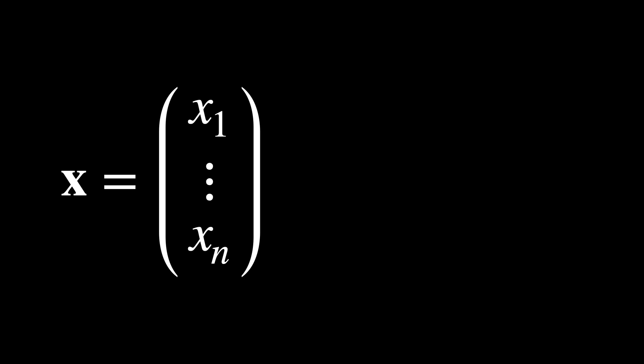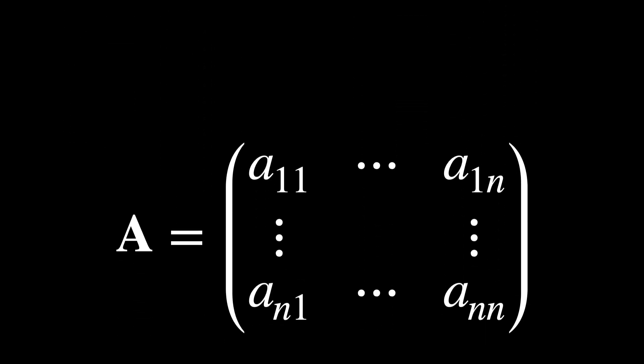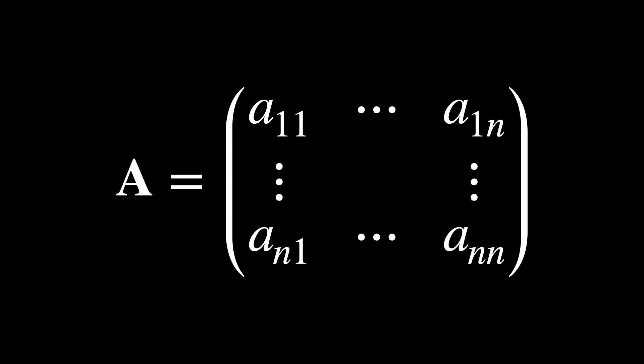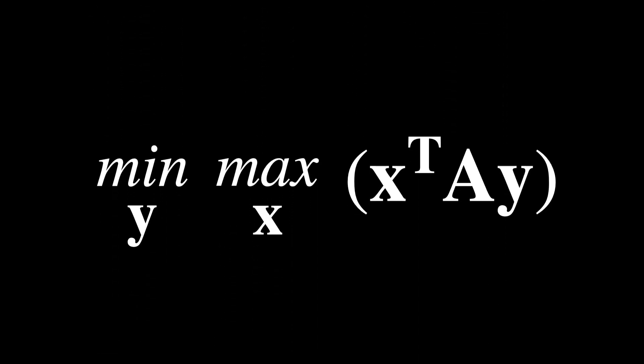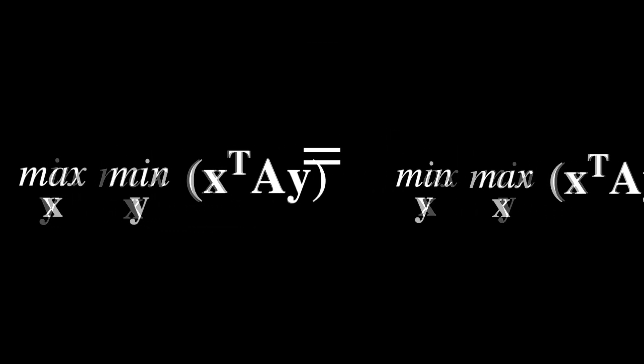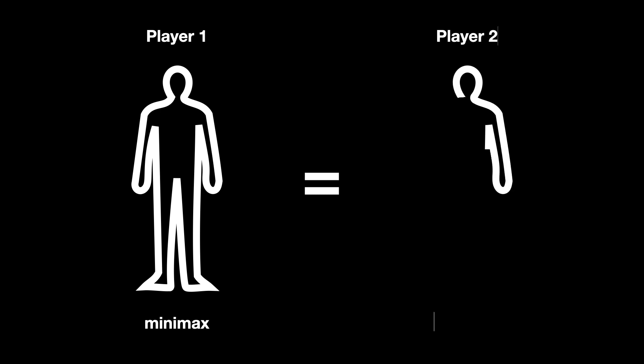Each player chooses a strategy that maximizes their minimum payoff, considering the worst-case best response by the opponent. The strategies are found by solving a linear programming problem where the goal is to maximize the minimum expected payoff. Suppose x is a vector representing the probabilities with which player 1 plays each strategy, and y is a vector for player 2. The payoff matrix A contains the payoffs to player 1 for each combination of strategies. The minimax theorem guarantees an equilibrium where the best minimax strategy for player 1 — maximizing the minimum payoff — equals the best maximin strategy for player 2, minimizing the maximum payoff.